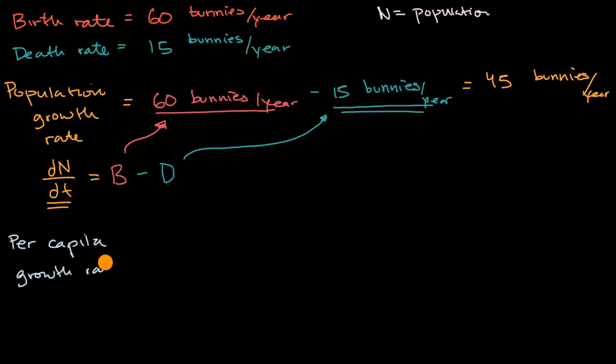Or population growth rate. Per capita population growth rate. Now per capita means you could view it as on average per individual. What is the average growth rate per individual? What is that going to be? Pause this video and try to think about it.